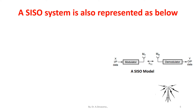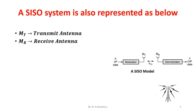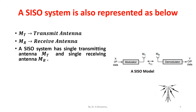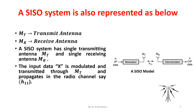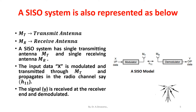A SISO system is also represented as a diagram in which M suffix T represents the transmit antenna and M suffix R represents the receive antenna. A SISO system has a single transmitting antenna M_T and a single receiving antenna M_R. The input data X is modulated and transmitted through M_T, propagates in the radio channel say h_11.